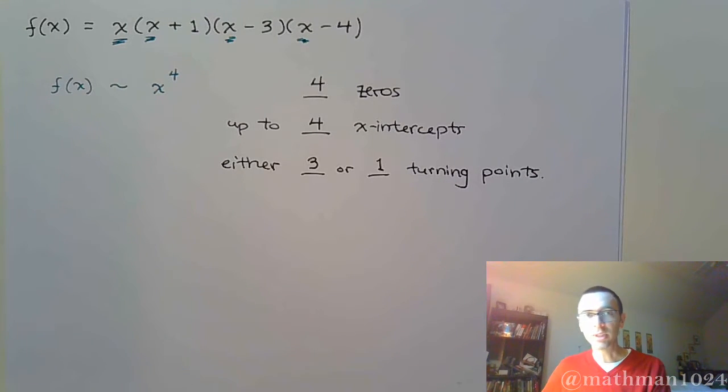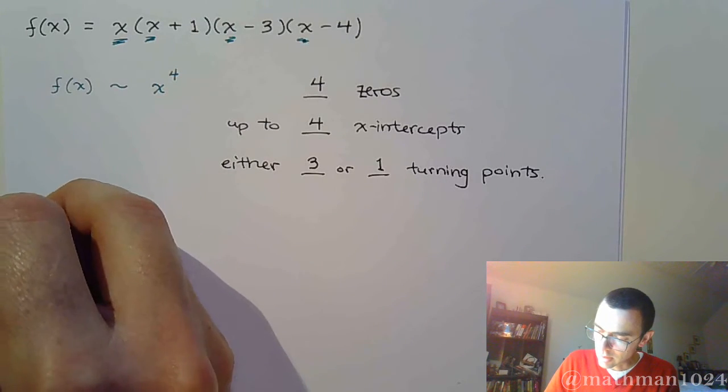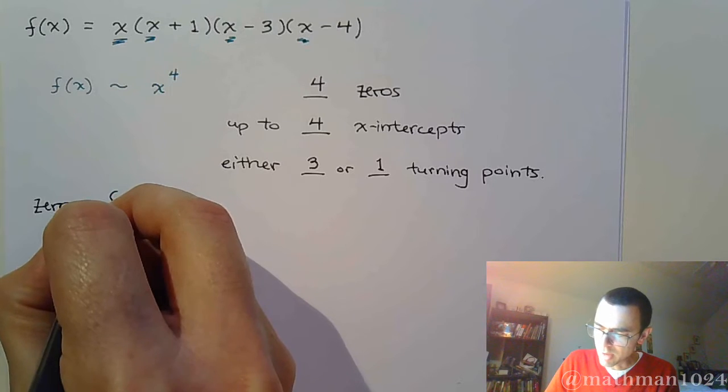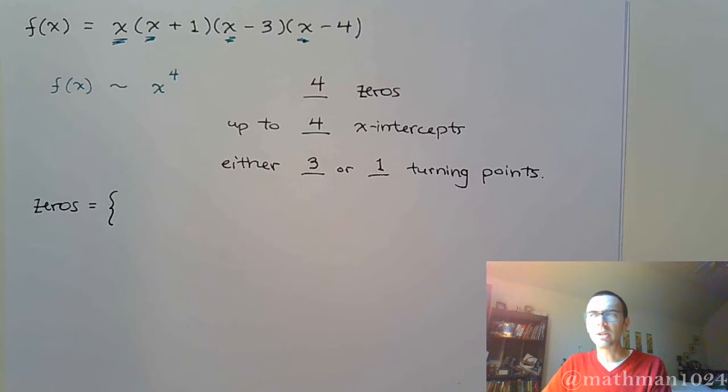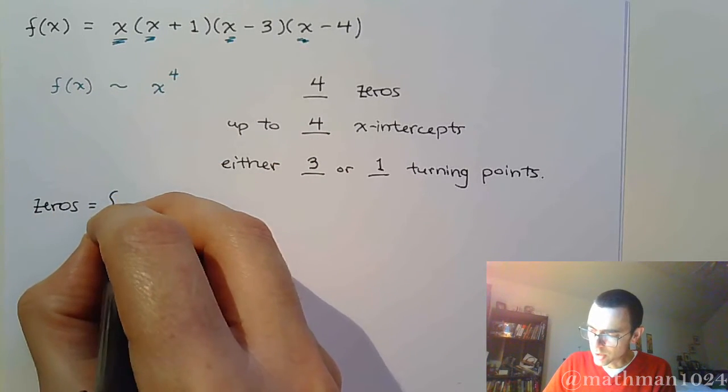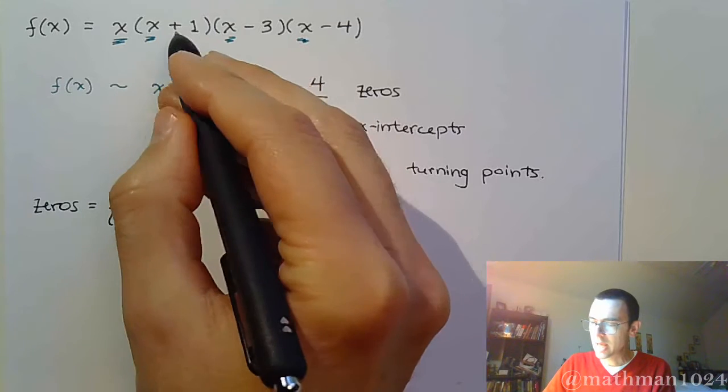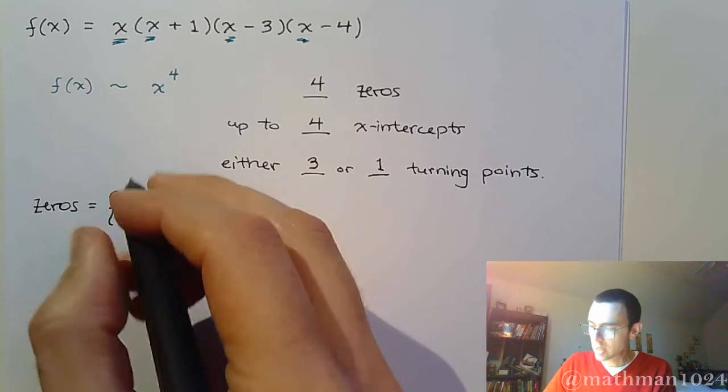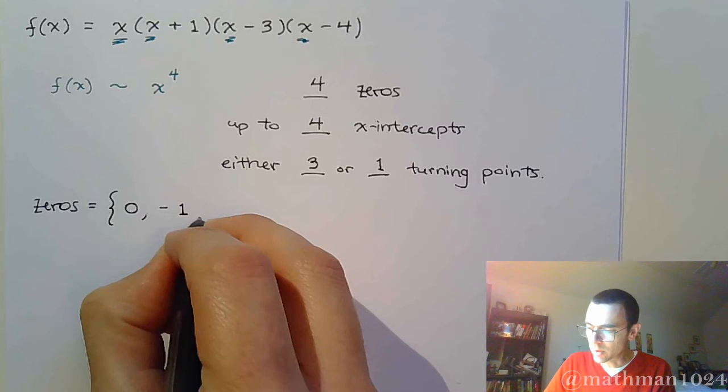Alright, now since this function is completely factored for us, it should be really easy for us to identify the zeros. So your zeros, and this goes back to that zero factor theorem that we talked about at the very beginning of the semester. What makes this guy equal to zero? Well, that would just be zero. And how about x plus one? Well, when we set that equal to zero, you get x equals negative one.